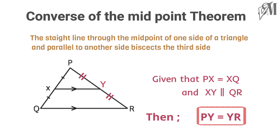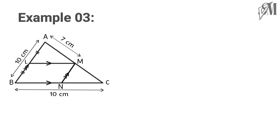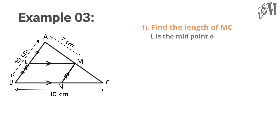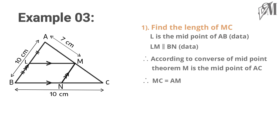Look at this example. ABC is a triangle where L is the midpoint of AB, and AB is parallel to MN. Also LM is parallel to BN. First we need to find the length of MC. L is the midpoint of AB and LM is parallel to BN. According to the converse of the midpoint theorem, M is the midpoint of AC.